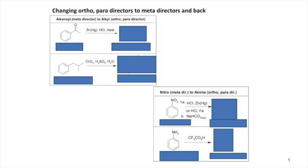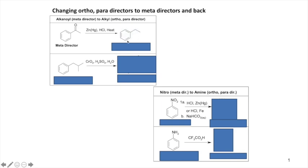A little review and warm-up: acetophenone (a benzene ring with a ketone) is a meta-director and deactivator because the carbonyl has no lone pair to resonate into the ring. If you treat it with zinc amalgam and HCl with heat (Clemmensen reduction), you completely reduce the carbonyl to an alkyl chain, converting it from a meta-director/deactivator to an ortho/para director and weak activator.